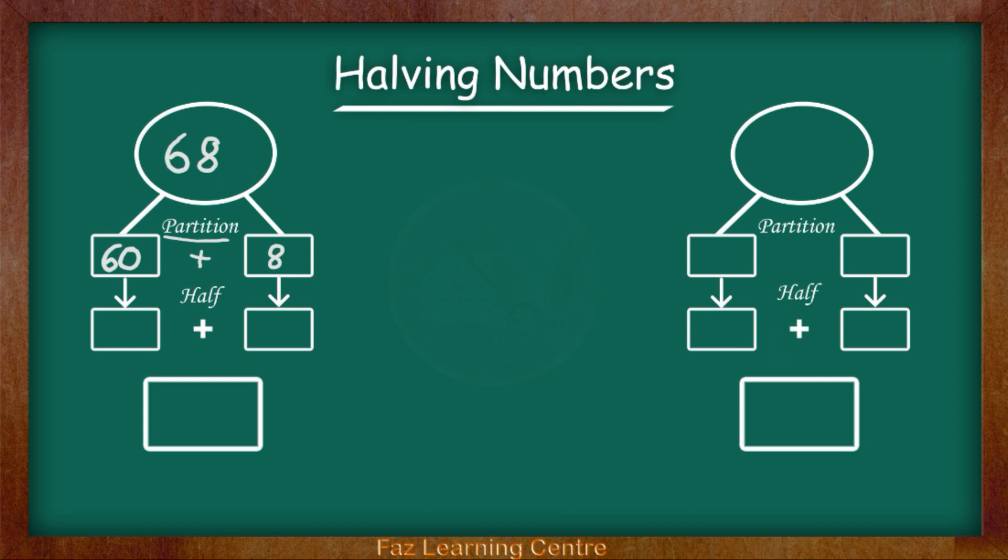Now we are going to halve the number 60. Half of 60 is 30. So we will write 30 in the bottom box. Now we are going to halve 8. Half of 8 is 4. 30 add 4 gives us 34. We have now successfully halved the number 68 and we got the answer 34.